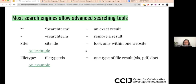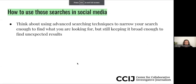The reason we're talking about these is that when you're doing searching on social media, it's really helpful to think about these search tools that exist for us also in the social media space. We can search specifically one person, one website, a type of information, an exact result, or remove things we don't want. When applying that to social media, the first thing we want to do is use these search techniques to narrow down our search field, because if we just search that plane code we could get millions of results — but we still want to keep it broad enough to find unexpected results.